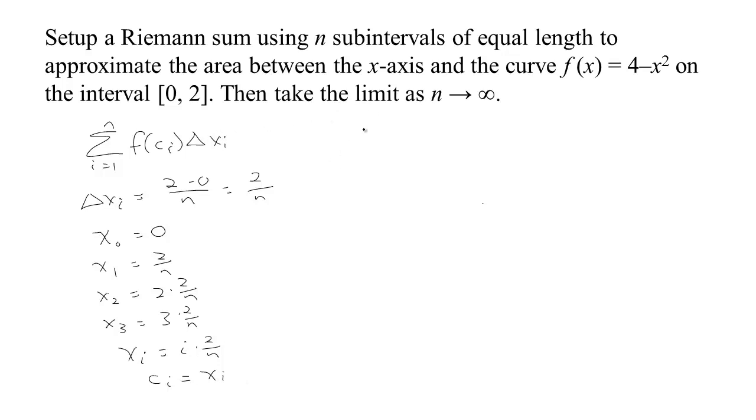I need to calculate f at each representative point. We know that the i-th representative point is the right endpoint, which is i times 2 over n. Based on what this function does—whatever you give it, it squares it and subtracts from 4—if you give it i times 2 over n, it's going to square that, which is 4i² over n², and subtract it from 4.